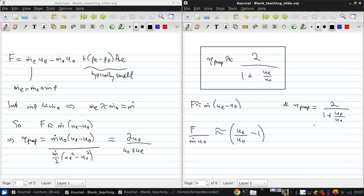So the production of high thrust per unit mass flow is in direct opposition to achieving high propulsive efficiency.